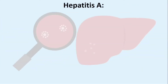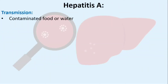Hepatitis A Transmission: Hepatitis A is spread mainly through eating food or drinking water that has been contaminated by the feces of an infected person. It can also be spread by eating raw shellfish that have come from water contaminated by sewage.